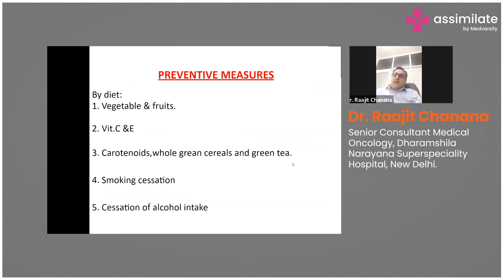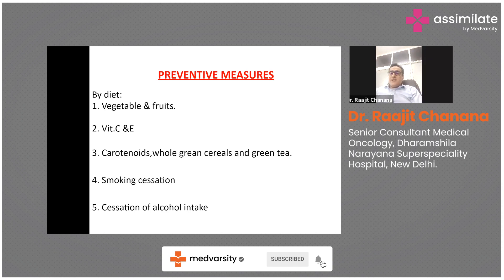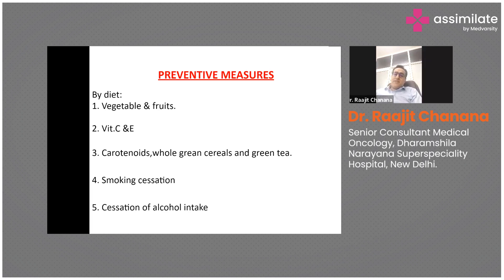Preventive measures include changing lifestyles and inculcating healthy habits, which will not only prevent gastric cancer but many other cancers and lifestyle diseases. It is also important to follow up regularly if one has a chronic history of dyspepsia, gastritis, abdominal pain, nausea, or dysphagia, and get evaluated at an early stage rather than regret later, since later diagnosis leads to worse prognosis and higher treatment costs.